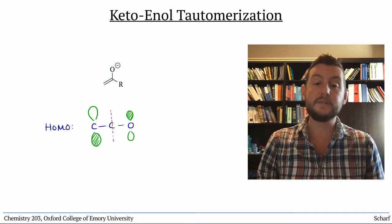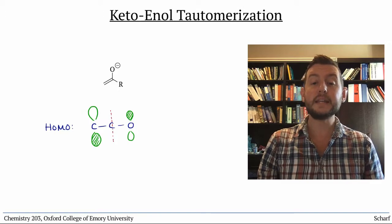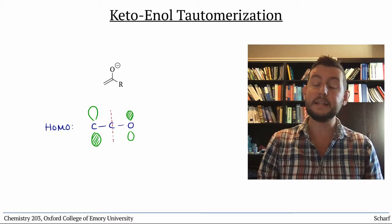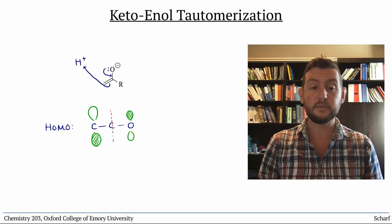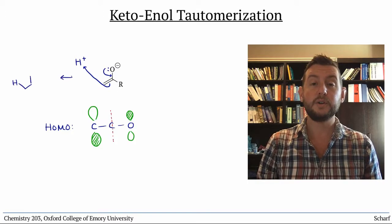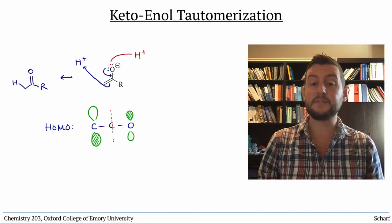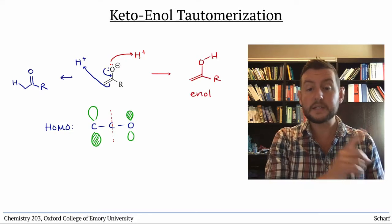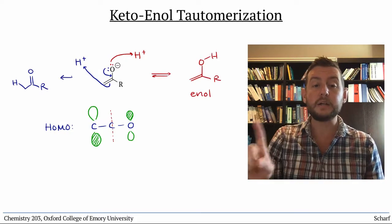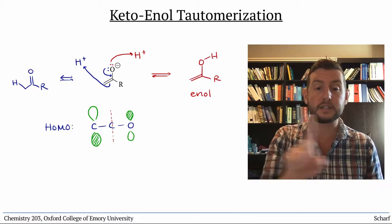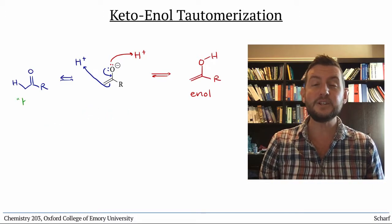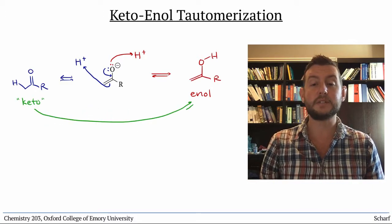One consequence of this delocalization is that enolates can be protonated at either carbon, which gives us a carbonyl compound, or at oxygen, which gives us an enol. This process, shuffling an H plus between the alpha carbon and the oxygen, is called keto-enol tautomerization.